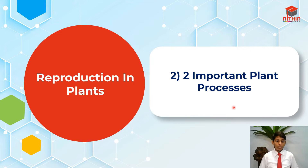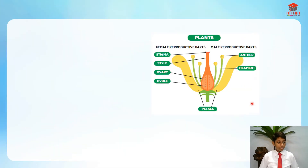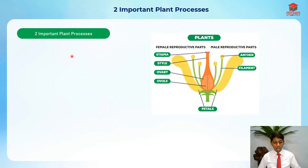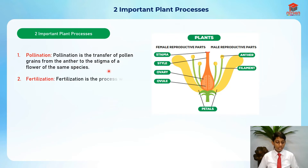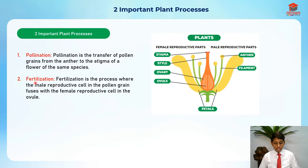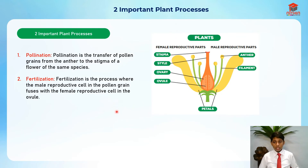For the next segment, I'm going to go through two important plant processes. Pollination is the transfer of pollen grains from the anther to the stigma of a flower of the same species. Fertilization is the process when the male reproductive cell in the pollen grain fuses with the female reproductive cell in the ovule. These two processes are extremely important for the plant reproductive system.